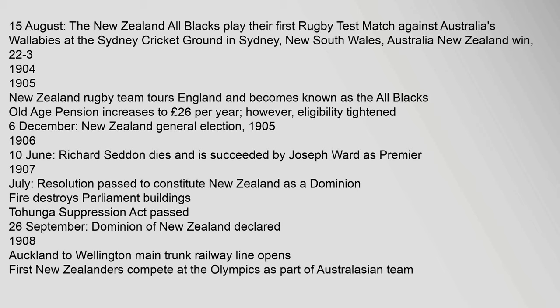15 August: The New Zealand All Blacks play their first rugby test match against Australia's Wallabies at the Sydney Cricket Ground; New Zealand wins 22–3. 1904–1905: New Zealand rugby team tours England and becomes known as the All Blacks. Old Age pension increases to £26 per year, however eligibility tightened. 6 December: New Zealand general election. 1905–1906: 10 June — Richard Seddon dies and is succeeded by Joseph Ward as Premier. 1907: Resolution passed to constitute New Zealand as a Dominion. Fire destroys Parliament buildings. Tohunga Suppression Act passed. 26 September: Dominion of New Zealand declared.